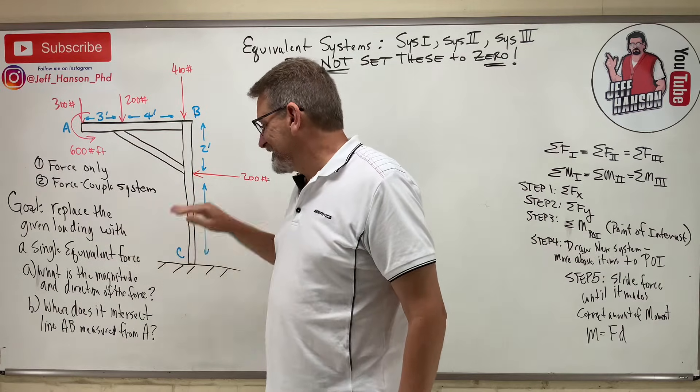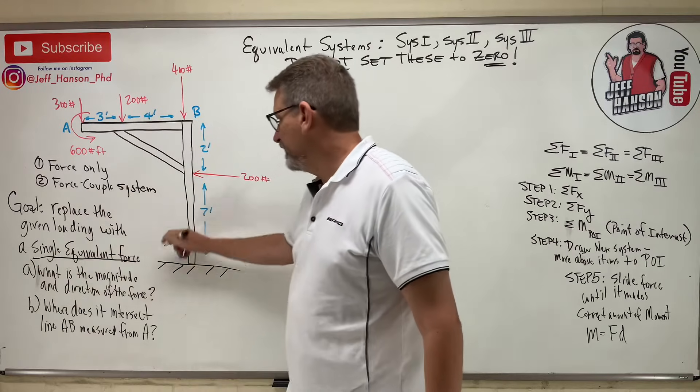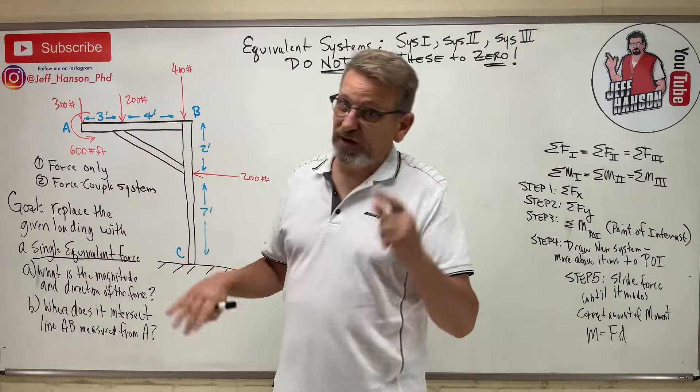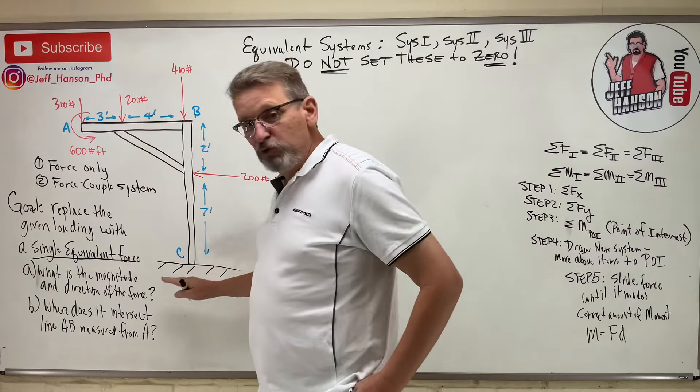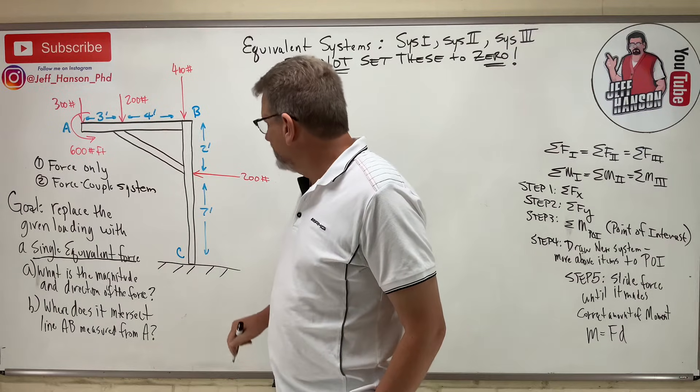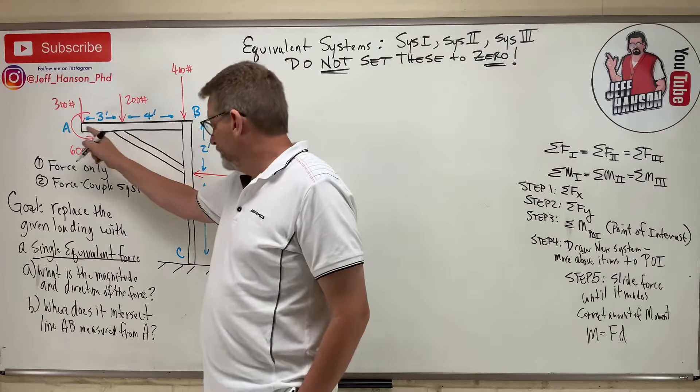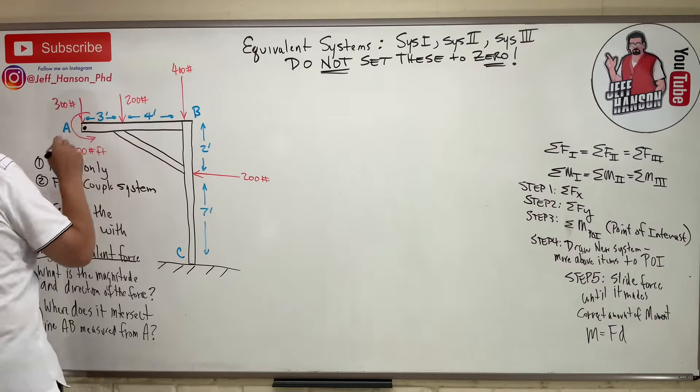Replace the giving loading with a single equivalent force. A single force. Not a force couple. So we're going to have system 1, 2, 3 on this one. What is the magnitude and the direction of the force? And where does it intersect line AB, which is up here, measured from point A. So measured from here.